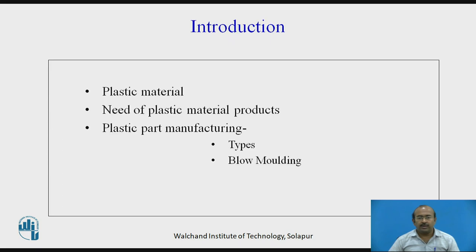Let us initially introduce about the plastic material and its allied advantages. As we know, there are many advantageous properties for plastic material over metals and other non-metals. It is being used for building new products as well as considering the replacement of material for existing products. Considering various parameters like geometry, quantity being produced, and varieties of plastic material, there are varieties of plastic part manufacturing processes. One important one is Blow Molding.